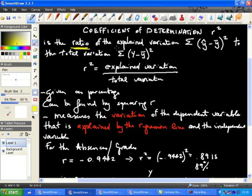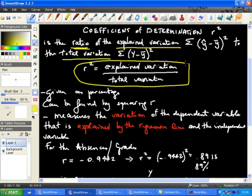is the ratio between the explained variation, which is the sum of the deviations between the predicted y value and the average y value, to the total variation, which is the sum of the deviations between the observed value and the mean y value. This is basically the formula for r squared. Explained variation over total variation. It's generally given as a percentage. It can simply be found by squaring r, but that's sort of the reasoning formula.